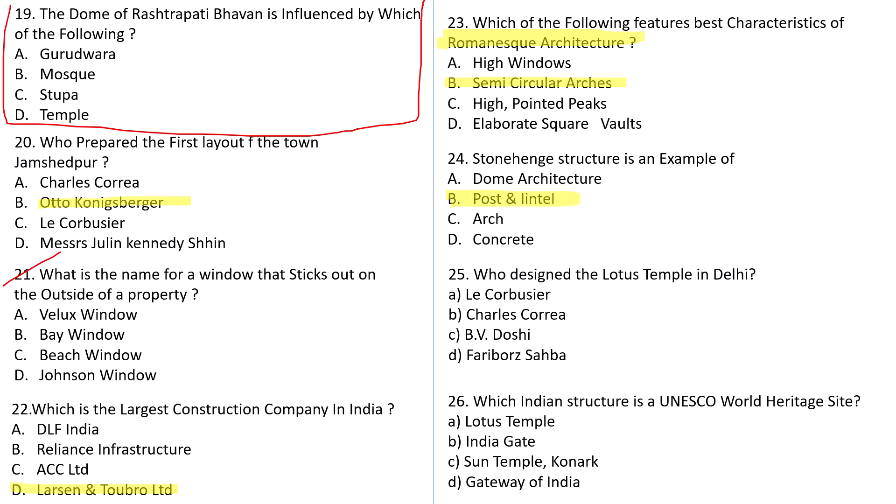Question number 25: Who designed the Lotus Temple in Delhi? Options: A: Le Corbusier, B: Charles Correa, C: BV Doshi, D: Fariborz Sahba. The answer is D — Fariborz Sahba. Question number 26: Which Indian structure is a UNESCO World Heritage Site? Options: Lotus Temple, India Gate, Sun Temple Konark, or Gateway of India. This is again a very easy question — try to solve it.